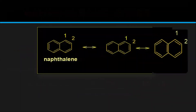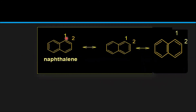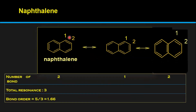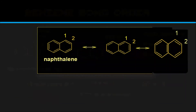Let's see another example — naphthalene. Fix positions 1 and 2. Naphthalene has 3 resonance structures. Counting the bonds at the fixed position across all 3 resonance structures gives: 2 + 3 = 5 total bonds. So the bond order is 5 divided by 3 = 1.66. The bond order for naphthalene is 1.66. Now you should have a clear idea of the formula: total number of bonds between two atoms in all structures divided by the total number of resonance structures.